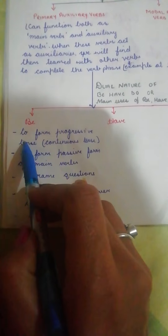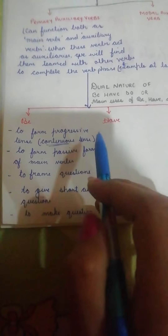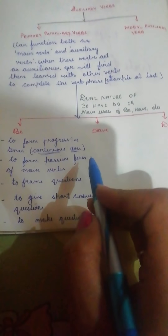The first usage of BE is to form progressive tenses. The progressive tense is basically the continuous tense. For example: 'I am making chocolate cake.' Here the -ing form shows that it is a progressive tense, and I know it is present because I used 'am.' Instead I could have used 'was,' which is also a member of the BE family. So we use the BE family to form progressive tenses.